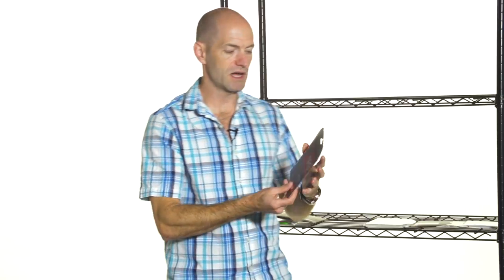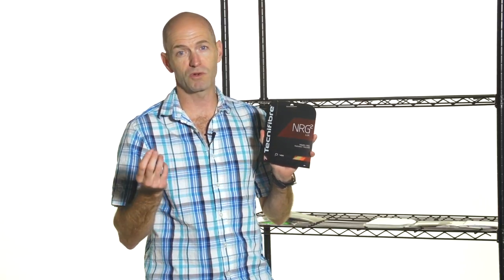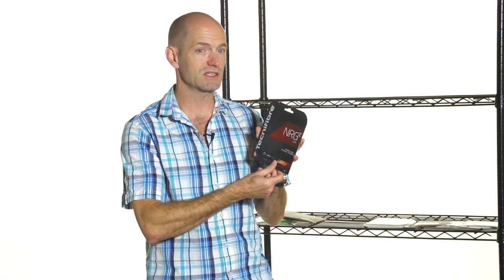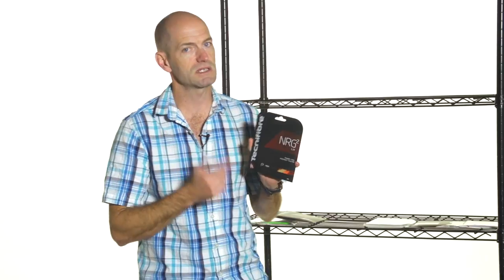Next up, we have got another Technifiber string and this one is NRG Squared. It's a real go-to multi-filament. It offers a great blend of power, control, and comfort. It lasts pretty well too. I have the 17 gauge, but if you want to look with me right now, you can get more durable gauges such as the 16 gauge. It's a great hybrid option too. You can put this in the mains or the crosses with a stiffer string or with natural gut to really fine tune the performance of your racket. So it's a great go-to string. Wilson NXT is another one that's right in there with NRG Squared too as a go-to multi-filament.